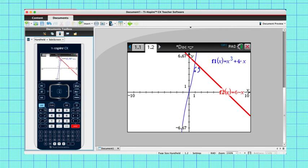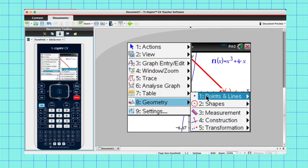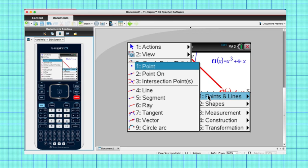And you can clearly see that there is a point of intersection approximately there. We need to find the exact value. So go to menu, geometry, points and lines, intersection points.